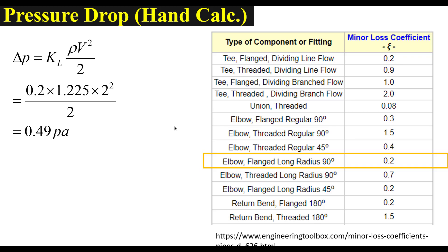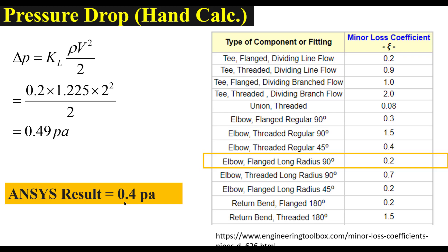Now we will do some hand calculation to validate our ANSYS solution. We have the formula for pressure drop in a pipe bend, where KL is the loss coefficient. This loss coefficient is equal to 0.2 for a 90 degree long radius pipe elbow. By hand calculation, the pressure drop value is equal to 0.49 Pascal, and from ANSYS we obtained a result of 0.4 Pascal, which is very close to our hand calculation. So our solution is validated. Thank you for watching this video. In my coming videos I will present more examples to calculate minor losses in piping systems.